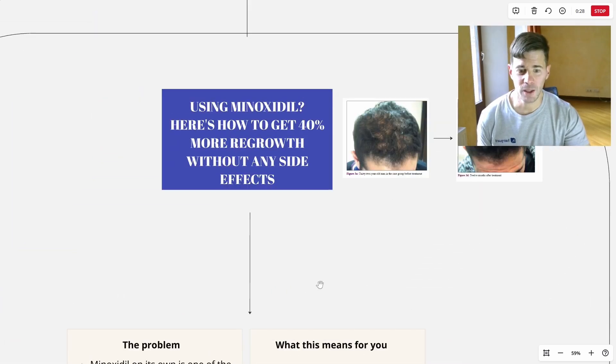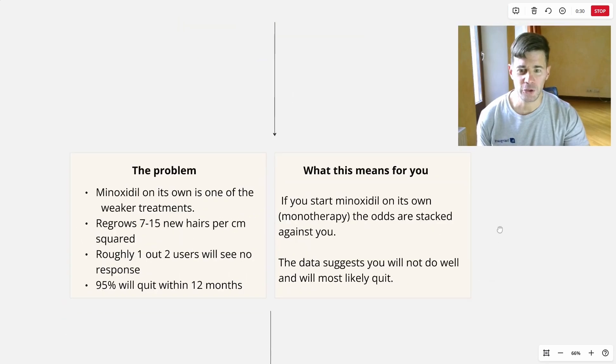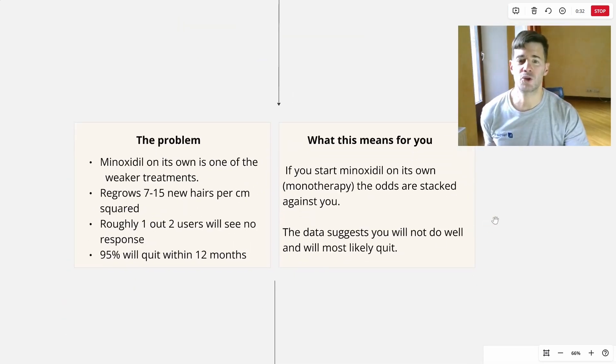And why is this important? Well, it's important because Minoxidil on its own is one of the weaker treatments on the market today. The average user gets seven to 15 new hairs per centimeter square, which is near the lower rank of the various treatments in terms of efficacy.